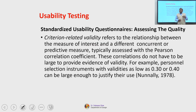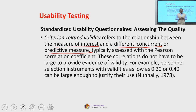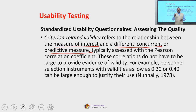The next one is criteria-related validity, which refers to the relationship between the measure of interest and a different concurrent or predictive measure — it is a comparison or assessment between these two parameters. Typically it is assessed with the Pearson correlation coefficient. These correlations do not have to be large to provide evidence of validity — for example, personal selection instruments with validities as low as 0.3 or 0.4 can be large enough to justify their use.